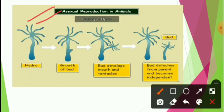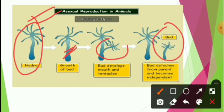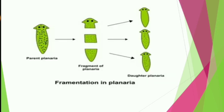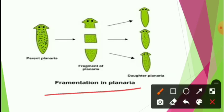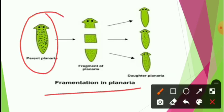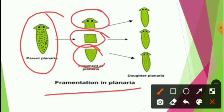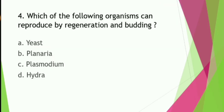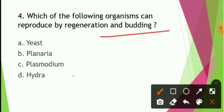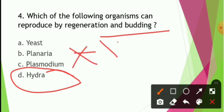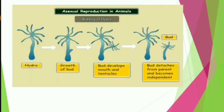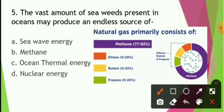Asexual reproduction in animals: budding in Hydra involves the growth of tentacles from the parent body. Fragmentation in planaria results in each fragment becoming a new individual — for example, 3 baby planaria from fragments. This is a very important question for your exam.